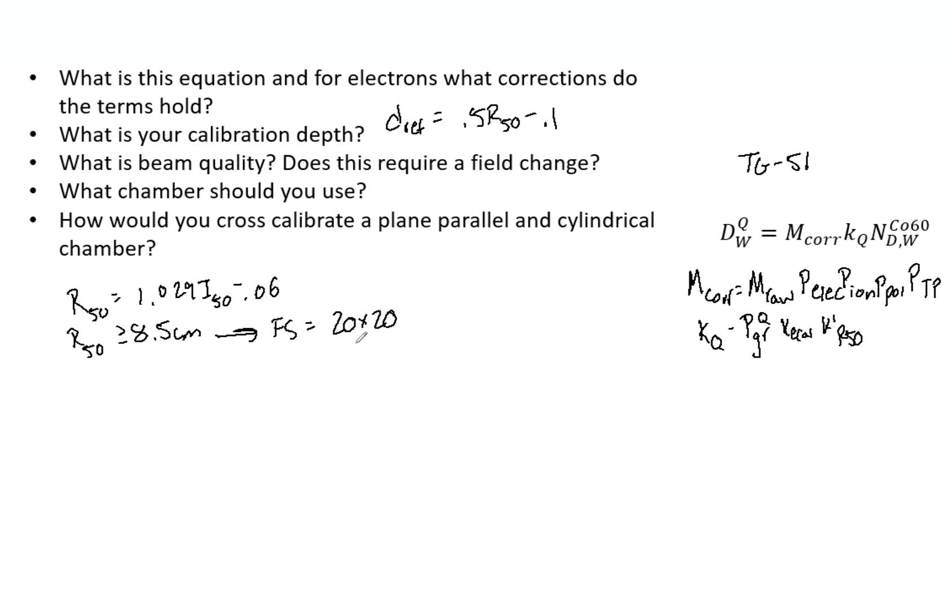Now, what chamber should you use? For electrons, it's recommended to use a plane parallel because it minimizes the variations in P-ion, P-pole, and P-gradient with depth. For plane parallel, P-gradient is equal to 1. And if you have 10 MeV or less, a plane parallel is preferred. 6 MeV or less, plane parallel is required by TG-51.